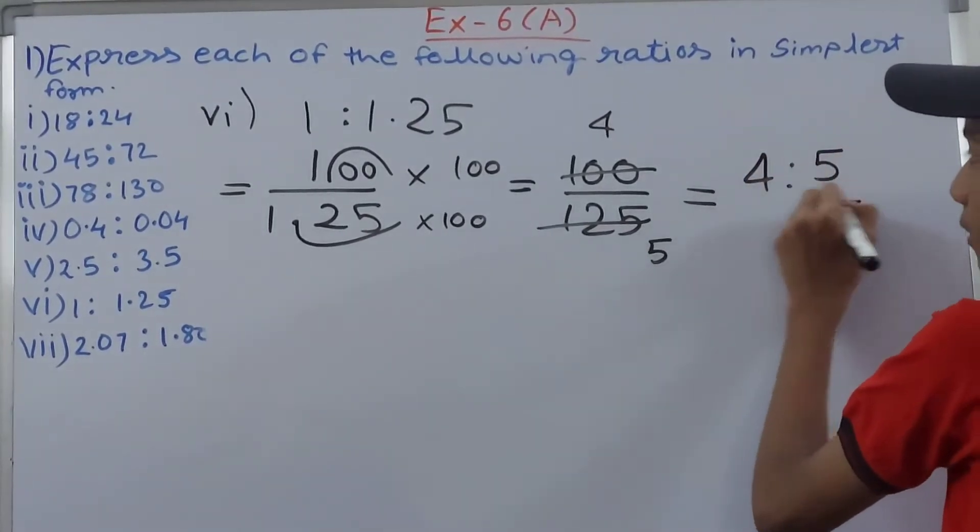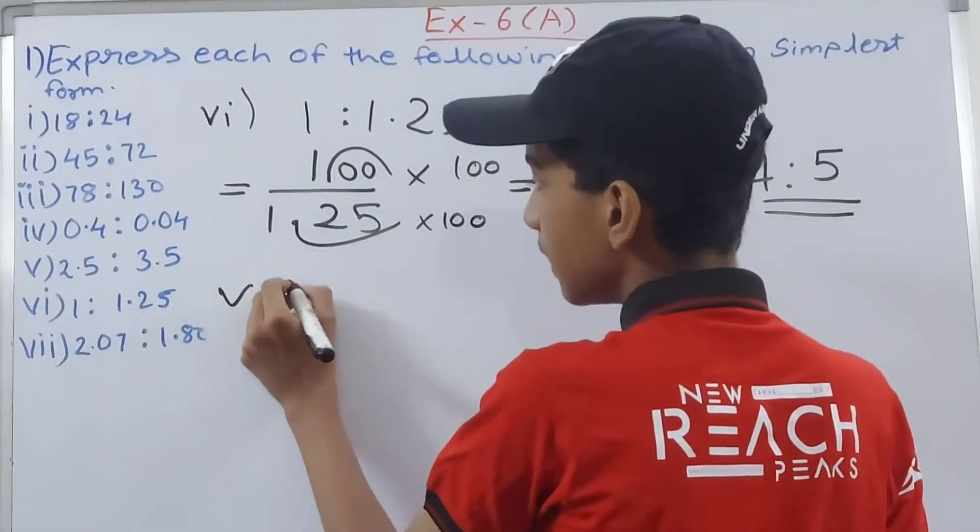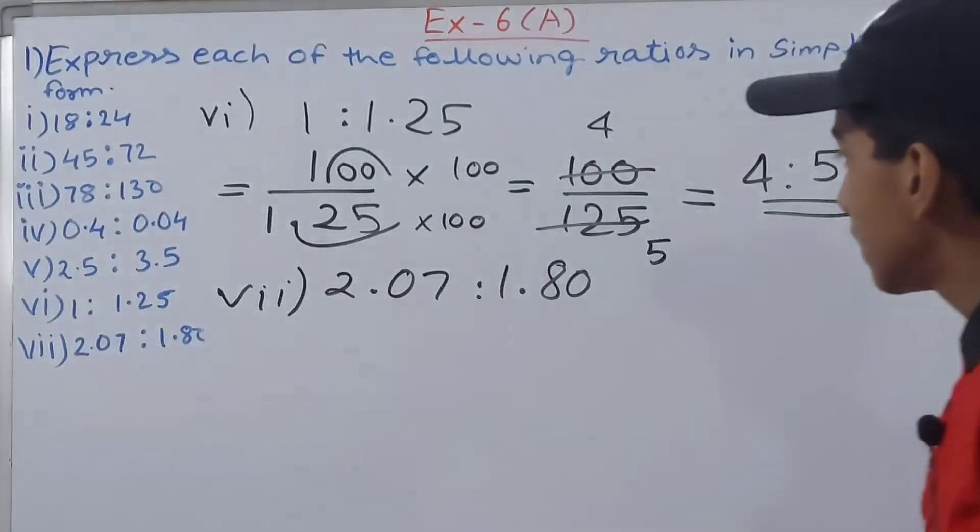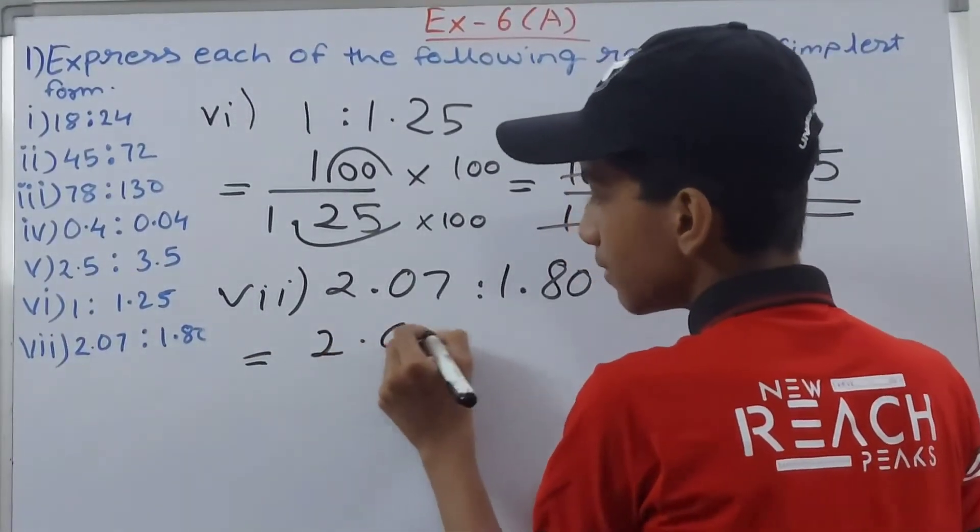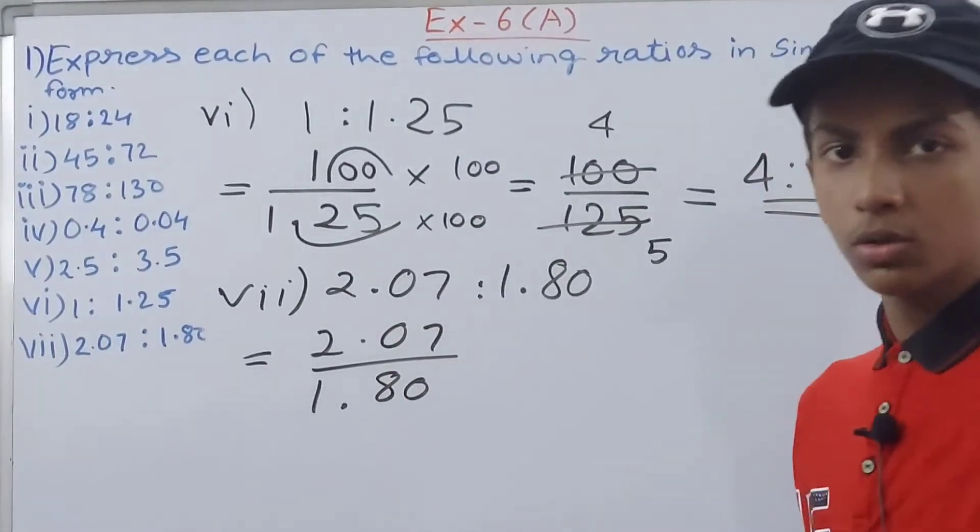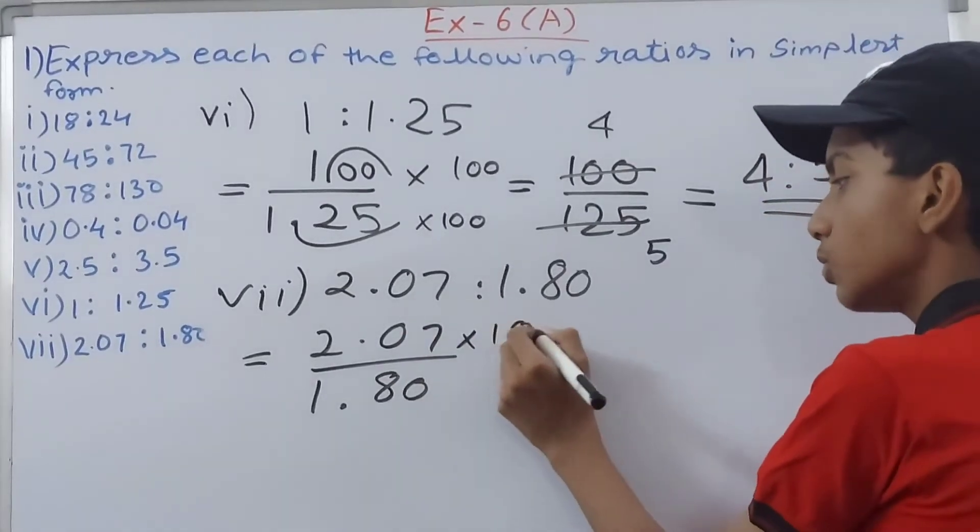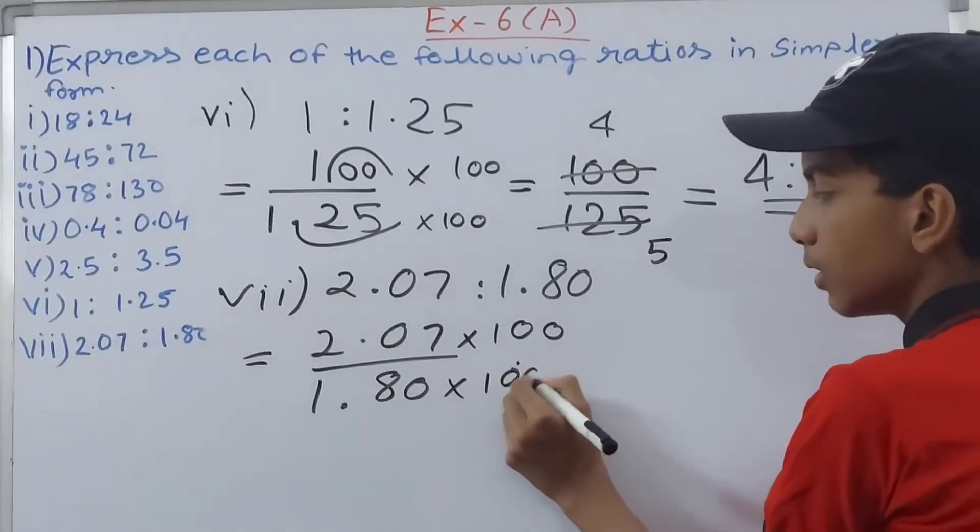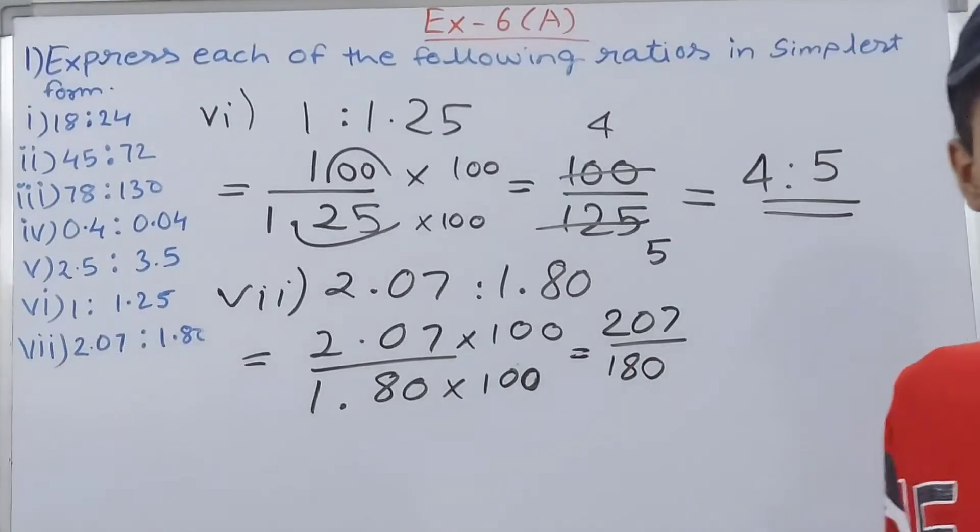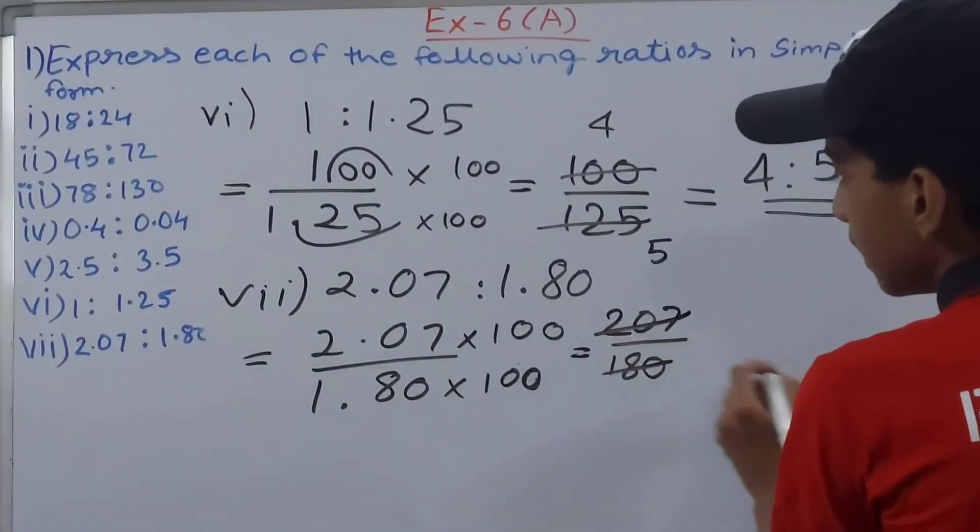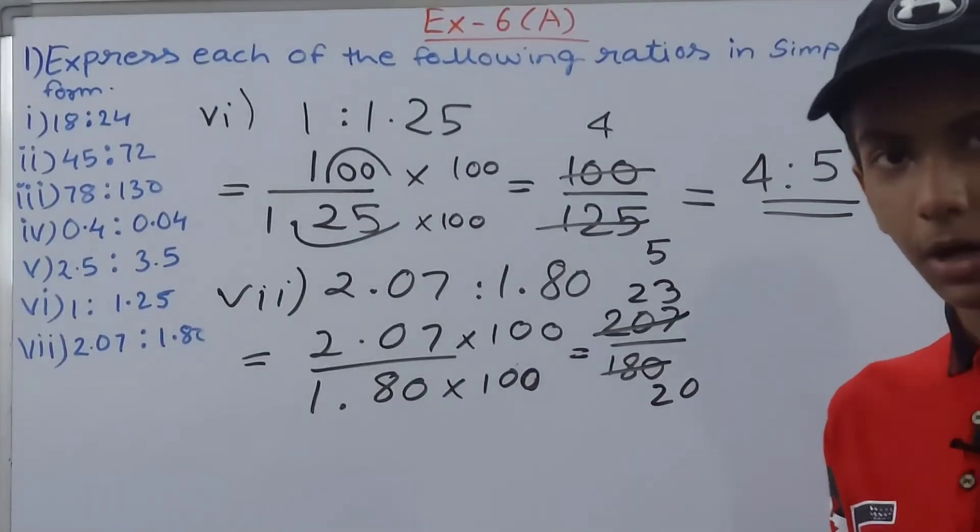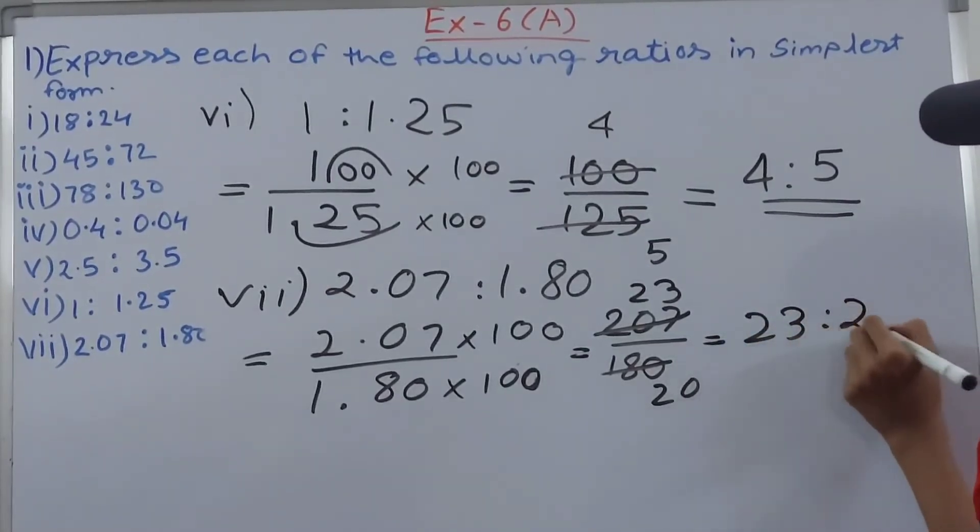Next we have the seventh part. This is 2.07 is to 1.80. So again we will convert this. You will have 2.07 in the numerator upon 1.80. And you can see again two decimal places here and here also, we will multiply it by two decimal places, so two zeros, into 100. And again two decimal places, so two zeros here as well. And now we will have 207 upon 180. Which number will cut this off? 9. Here we'll have 23 and here 20. Can we cancel this any further? No, because 23 is a prime number. So we will have 23 is to 20.